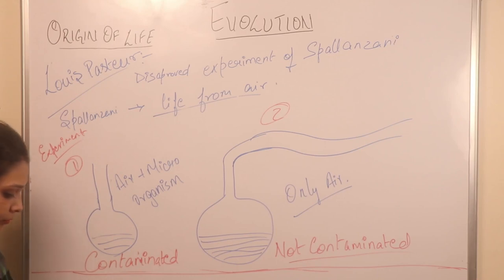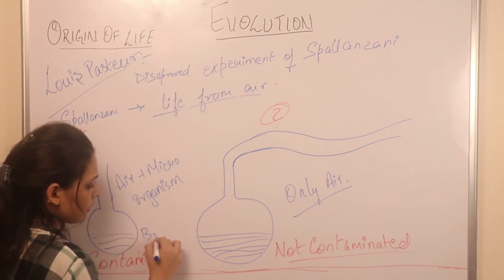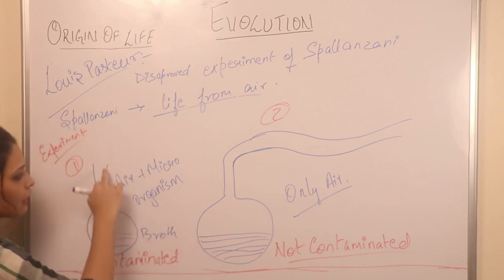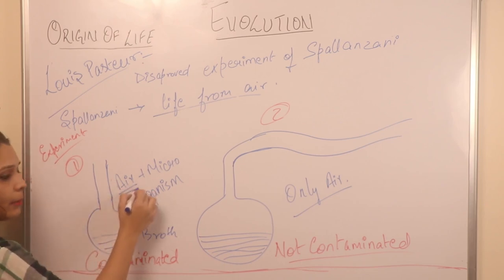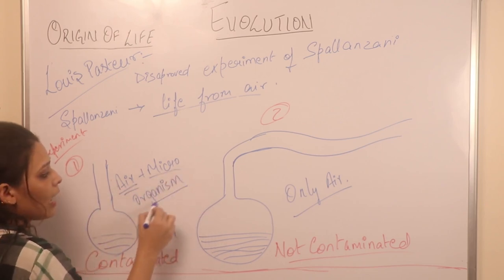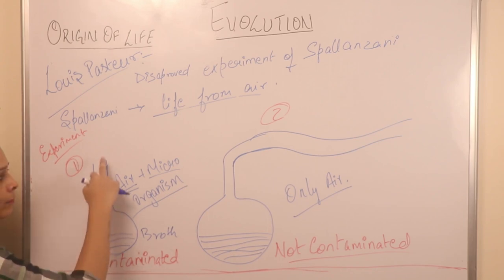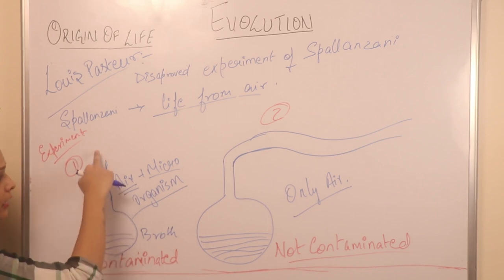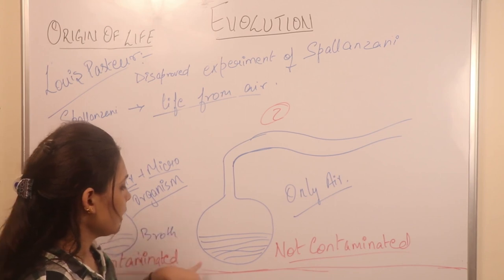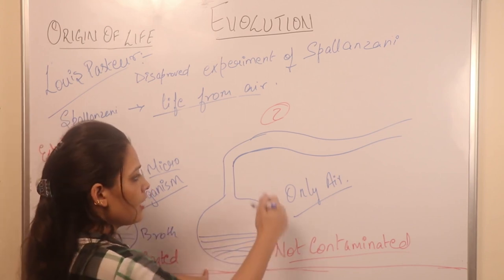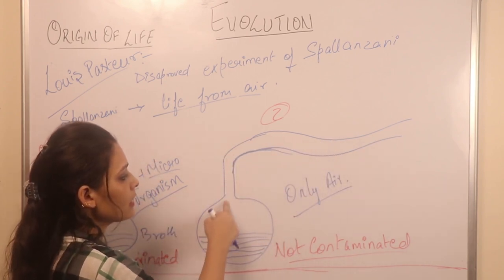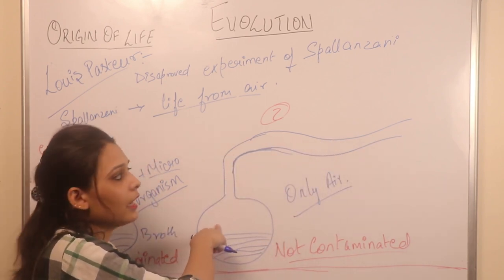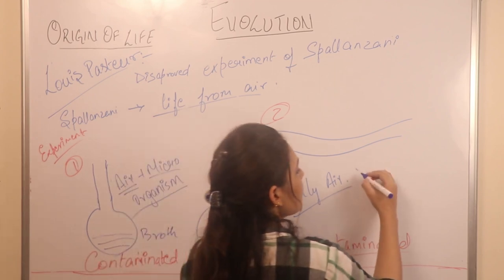How did he do this? He put broth in a flask where the neck was straight. In this flask, both air and microorganisms can come in. In the other flask, the neck was curved. In this curved flask, only air can enter — the microorganisms cannot come through.